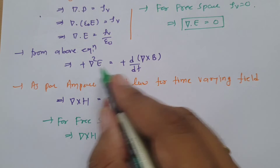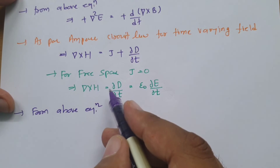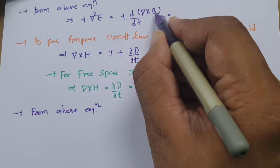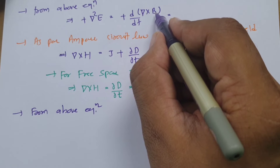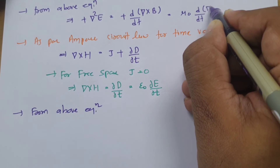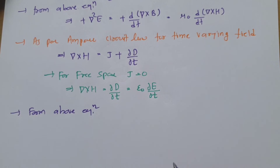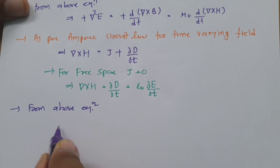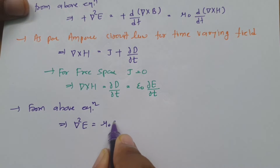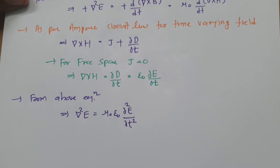We can use this equation in our expression. Now, del cross H cannot be placed directly — we need to express del cross B in terms of H. For free space, B equals μ₀H, so we can write: μ₀ d/dt of del cross H. Now substituting del cross H equals ε₀ del E/del t, the equation becomes del squared E equals μ₀ε₀ del squared E/del t squared.